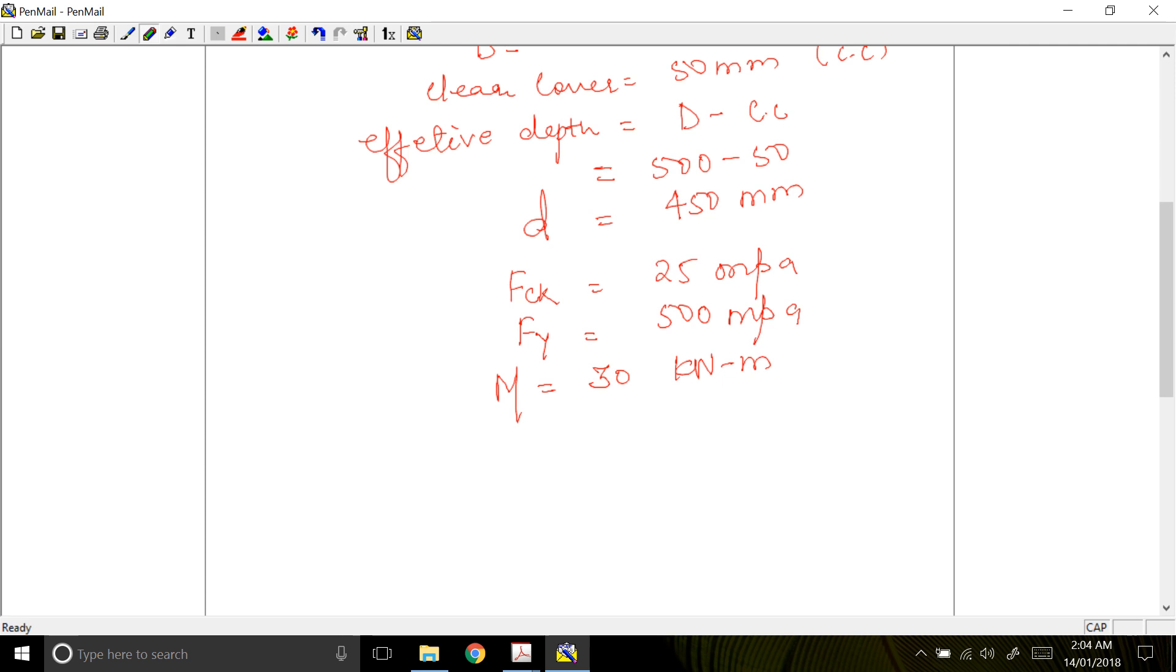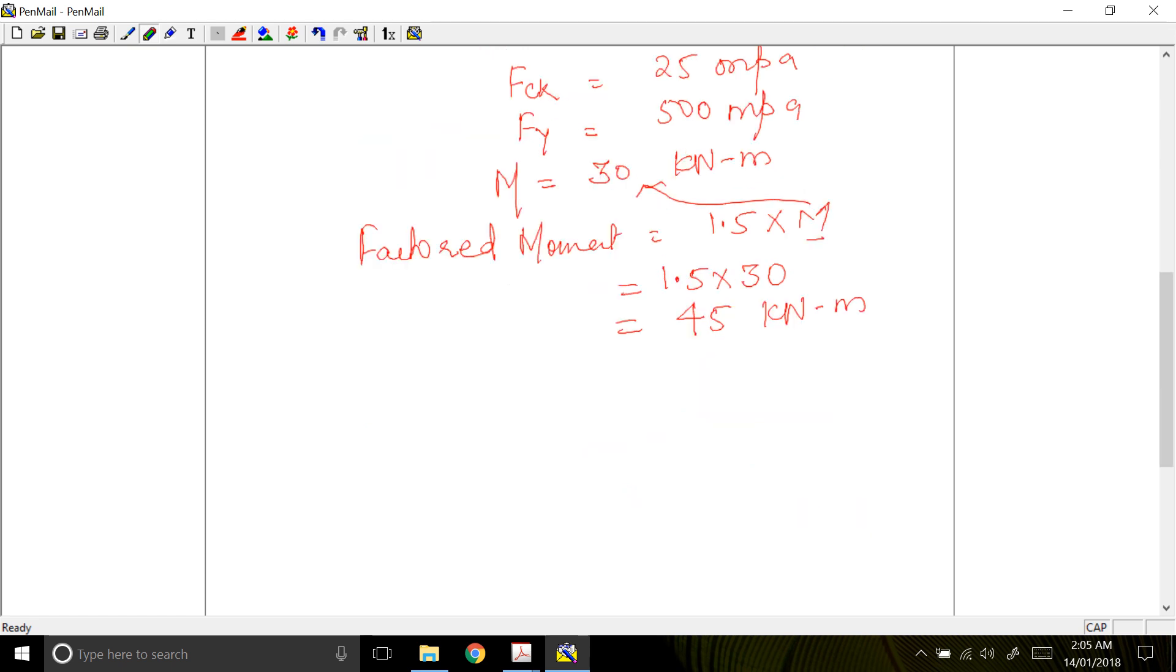In order to calculate the factored moment, we need to apply a factor of safety of 1.5 times your working moment. Factored moment is equal to 1.5 into your M. M is this moment, 1.5 into 30 kNm, which is equal to 45 kNm. So factored moment or design moment is 45 kNm.